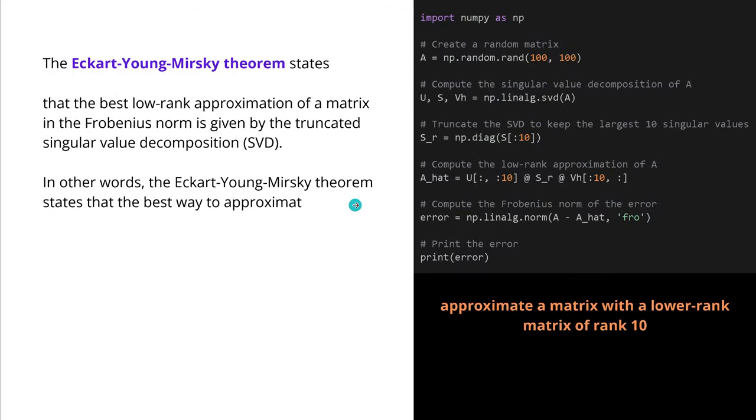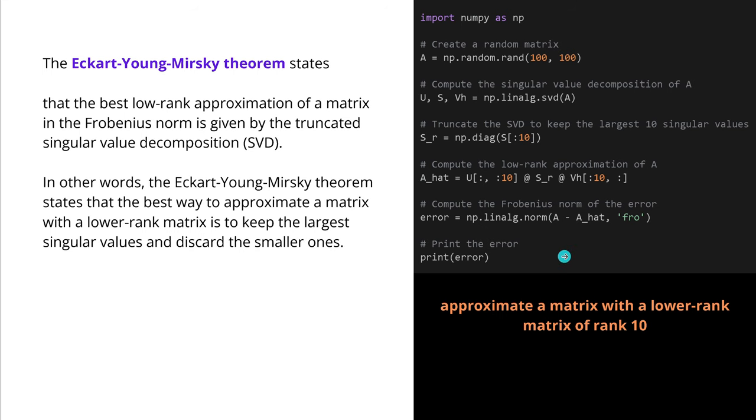For you, if you're new to this, look, here I have written here a short code for you. I have some random matrix. I compute here the singular value decomposition of this complex matrix. Then I truncate here to keep the largest, for example, 10 singular values of this. I compute the low-rank approximation of this high-dimensional matrix. I compute here the Frobenius norm of the error. And this is where you can play around and have an idea how this system works on a very simple Python program. So we approximate a matrix with a lower rank matrix of rank 10, but please go with whatever you like.